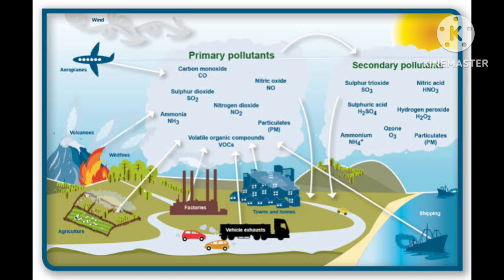Lead used to be a major air pollutant emitted by vehicles. Leaded petrol used to be the primary source of airborne lead emissions in Indian cities. This problem has been overcome by using unleaded petrol in most cities in India. Lead interferes with the development and maturation of red blood cells.